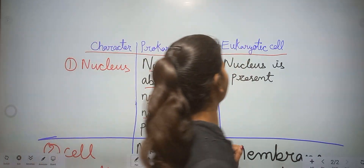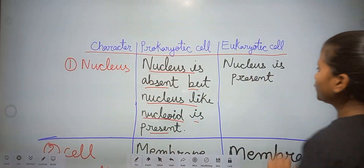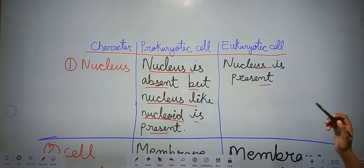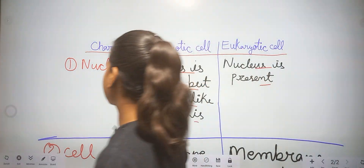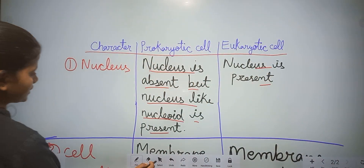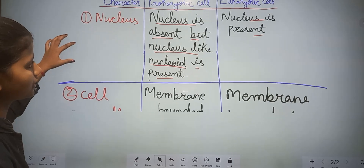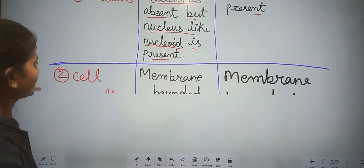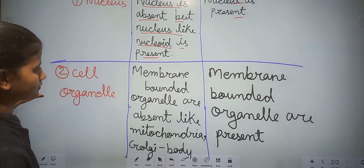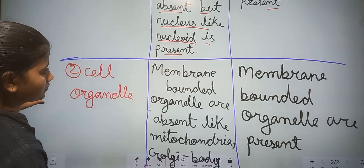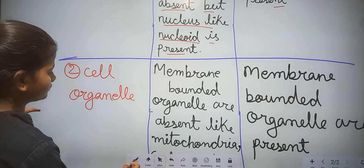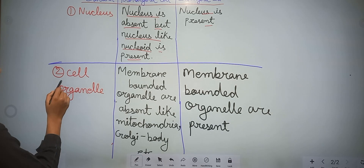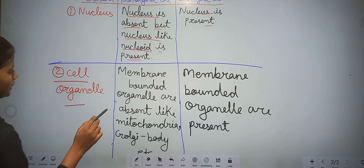And in eukaryotic cell, a well-developed nucleus is present. Our second character is cell organelles.